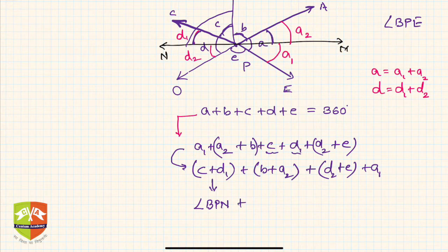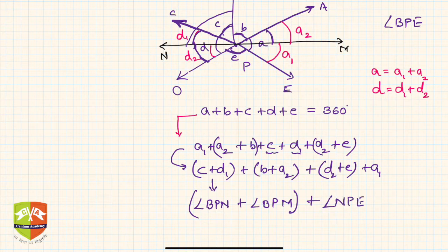Now you write them together. And then d2 plus e, so if you see, this is d2 and this is e, so d2 plus e is nothing but angle NPE. And a1 can be directly written as angle EPM. Club them together as well.